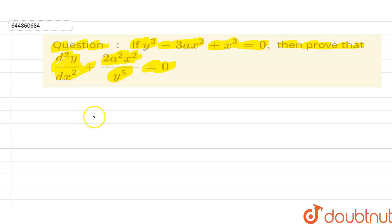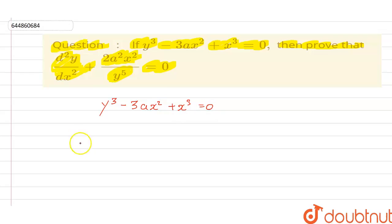The given equation is y³ minus 3ax² plus x³ is equal to 0. First, simplify this equation: y³ is equal to — shifting the whole function to the right-hand side — 3ax² minus x³.